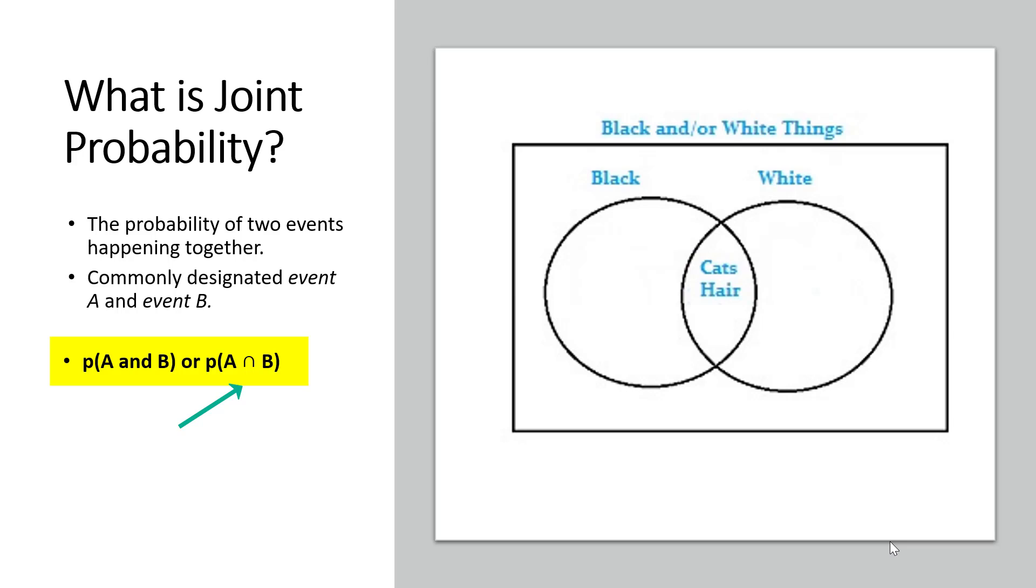We can also describe joint probability as the intersection of two or more events. The intersection can be represented by a Venn diagram like this one.